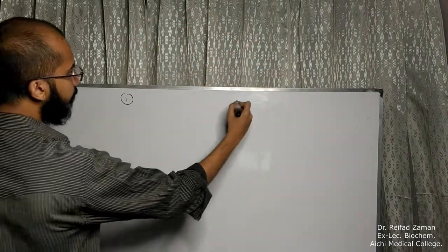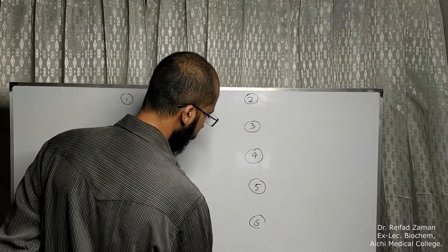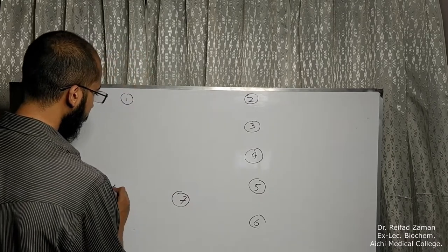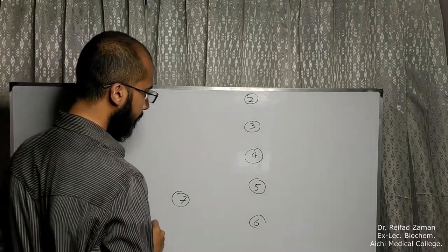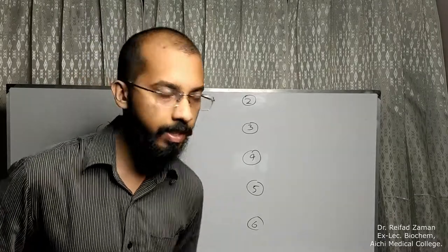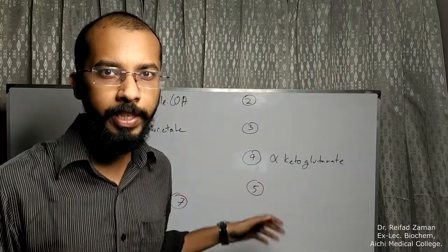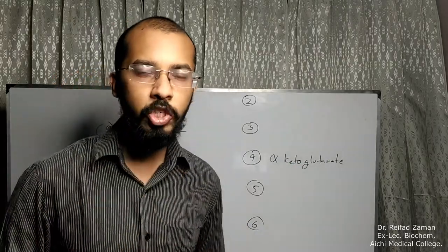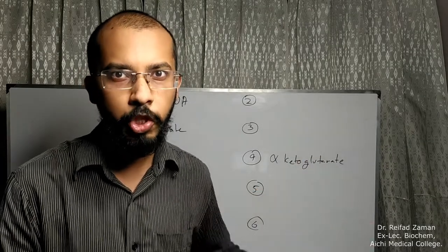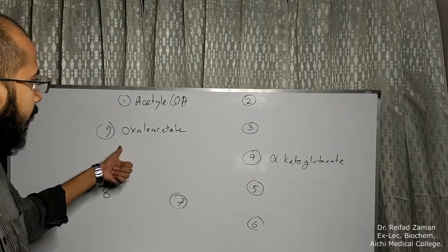Now we know that there are in total nine steps, so we are going to number each of the steps: one, two, three, four, five, six, seven, eight, nine. The reaction starts with acetyl-CoA, and in step four this acetyl-CoA is converted into alpha-ketoglutarate. Number nine is oxaloacetate. Out of these nine chemicals, you actually need to remember these three. The rest you will automatically remember. So just remember: starts with acetyl-CoA, number four alpha-ketoglutarate, and number nine oxaloacetate.